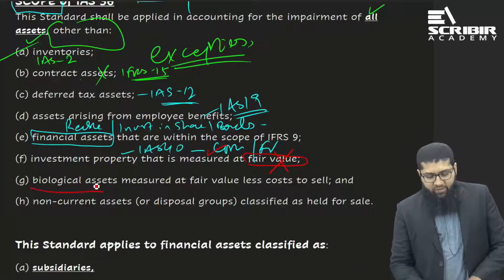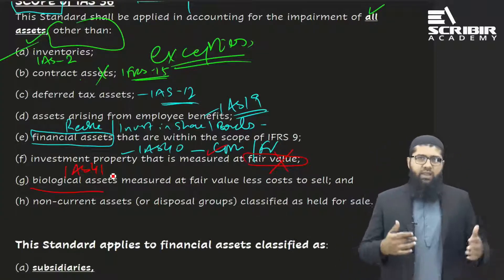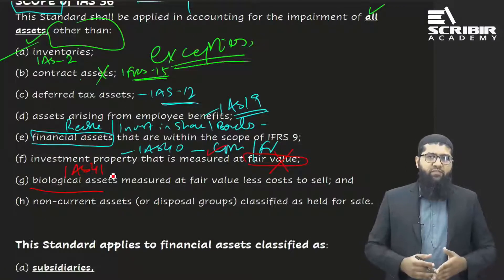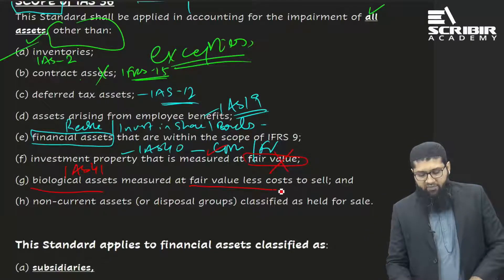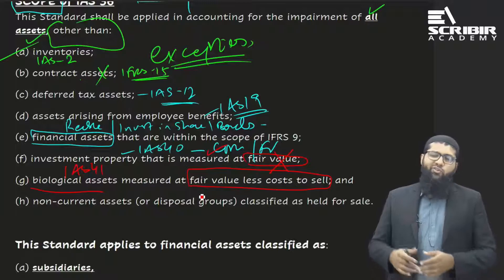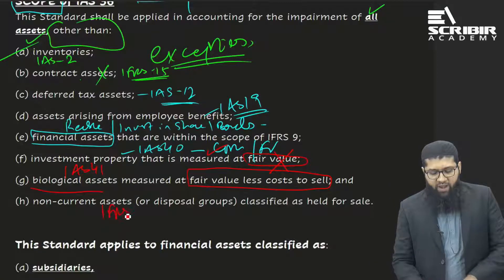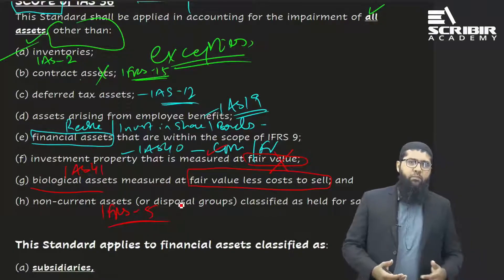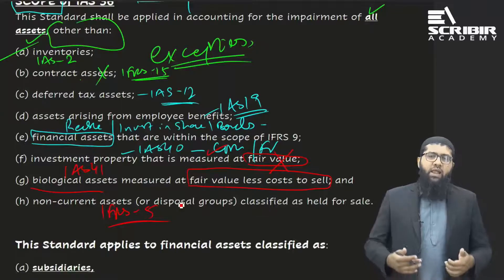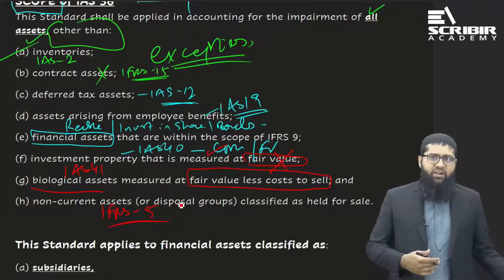Biological assets are covered under IAS 41 — the living plants and animals held for agricultural activity. IAS 41 gives two measurement bases; one of them is measuring biological assets at fair value less cost to sell. When you are already measuring them at fair value less cost to sell, you don't need to separately apply IAS 36. Lastly, non-current assets held for sale or discontinuing operations under IFRS 5 already require measurement at the lower of carrying amount or fair value less cost to sell, so IAS 36 does not need to be separately applied.